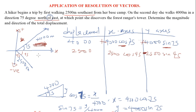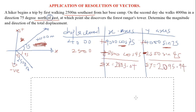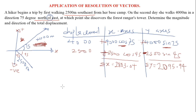The 2500-meter x-component resolves to the positive x side. We now find the summation of all x-axis components and the summation of all y-axis components. Adding them correctly, the x-summation is 2803.04 along the positive x-axis, and the y-summation is 2095.94 along the positive y-axis.